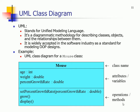Here's a UML for a Mouse class. The class name is at the top: Mouse. We have some attributes or variables — age, weight, and percentage of growth rate. Age would be an integer, weight would be a double because it could be 2.2 ounces, and percentage of growth rate would be a double as well. The bottom section shows the operations or methods: grow, display values, and set growth rate.